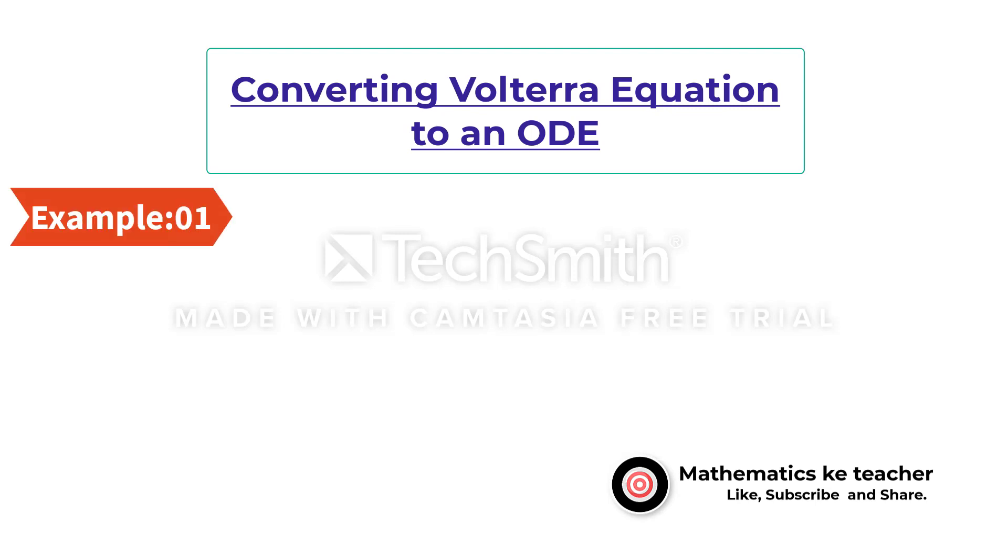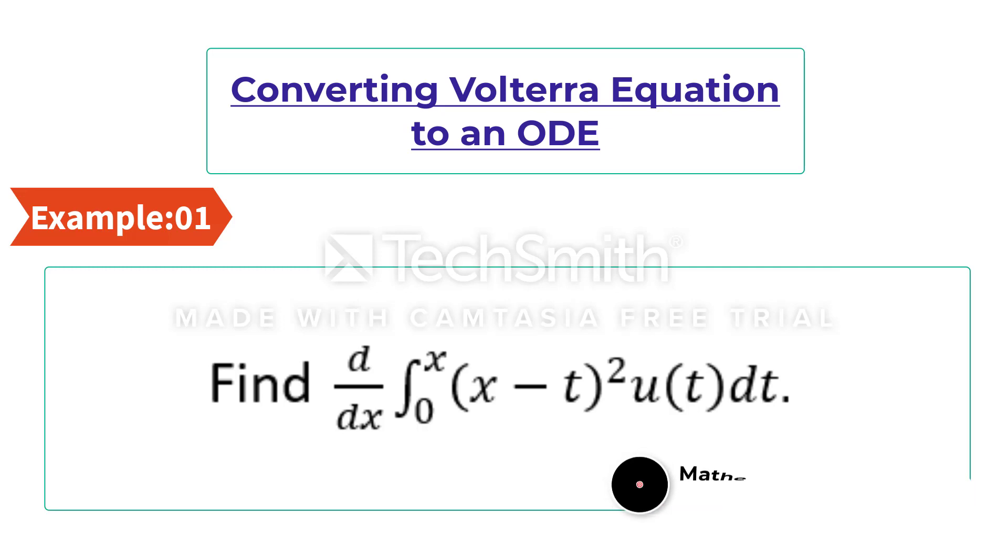Example number 1. Find the derivative of integral from 0 to x of (x minus t) whole square u(t) dt.